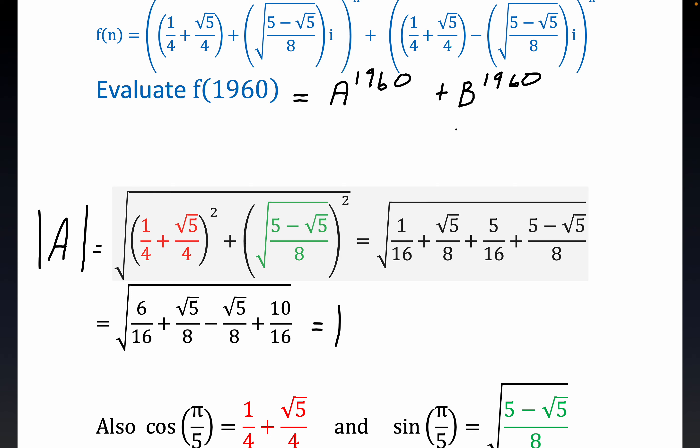And what that means is that this is a complex number that lies on the unit circle. So that makes it what they call a root of unity. Now in a similar fashion, since B is just its conjugate, we'll also get that the modulus of B, it's just a difference of a sign there and it gets squared anyway. So the modulus of B is also equal to 1. So they're both roots of unity.